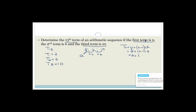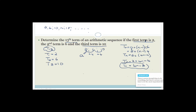That becomes 2 plus 4N minus 4, which simplifies to TN equals 4N minus 2. They asked for the 13th term, so T13 equals 4 times 13 minus 2. Four times 13 is 52, minus 2 equals 50. So my 13th term has the value of 50.